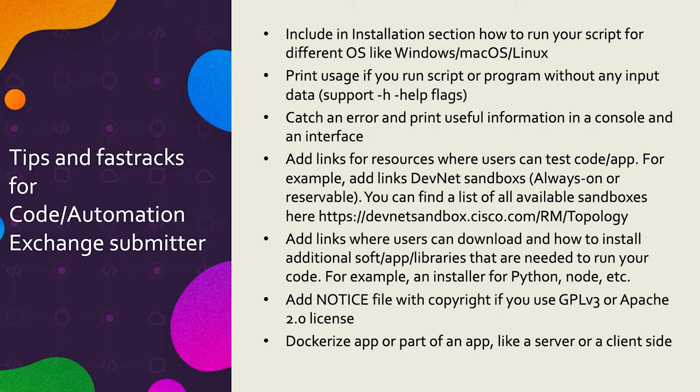A widespread mistake is not adding a separate notice file when you use GPL or Apache license, which is required as a copyright notice for these two license types. Tips and tricks for Code and Automation Exchange submitters: include in the installation section how to run your script on different operating systems; print usage if you run a script or program without any input data; catch errors; add links to resources where users can test the code or app; add links for downloading and installing additional software and libraries; and add a notice file with copyright if you use GPL or Apache license. And of course, secure your app.